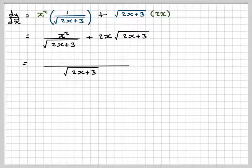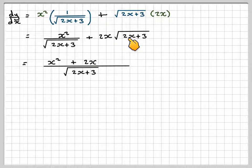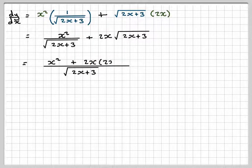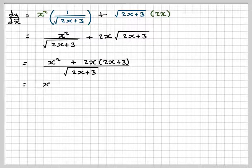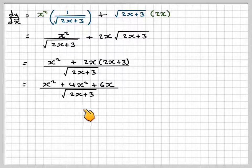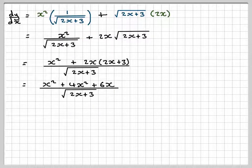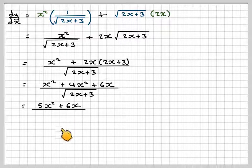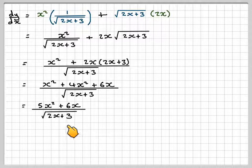We're going to have plus 2x, but we're going to have to multiply the 2x times the square root of 2x plus 3 by the square root of 2x plus 3. A root times the root cancels out, so we just get 2x plus 3, which is going to be equal to x squared plus 4x squared plus 6x over the square root of 2x plus 3.